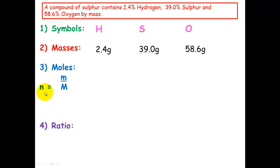We do that by using number of moles equals mass divided by molar mass. So for hydrogen, it's 2.4 divided by hydrogen's molar mass, which is 1, and we get 2.4. For sulfur, it'll be 39 divided by its molar mass, which is 32, which equals 1.2. And oxygen, 58.6 divided by its molar mass, which is 16, and you get 3.7.